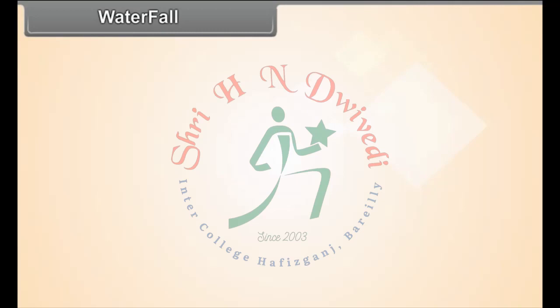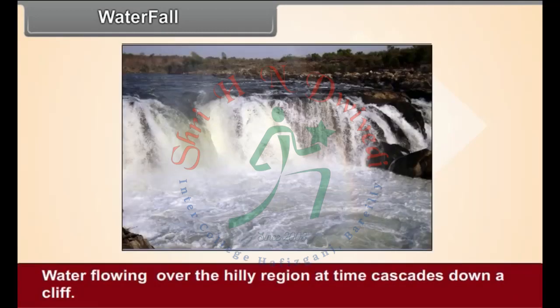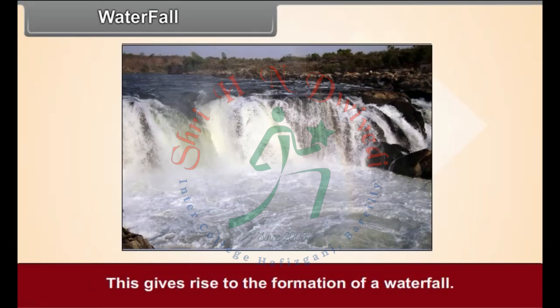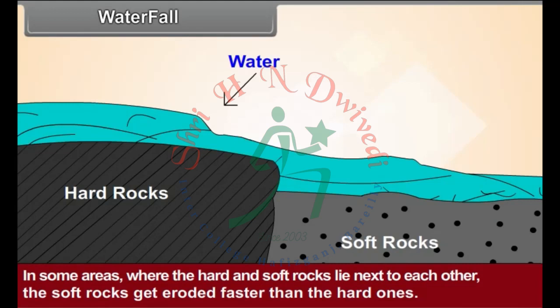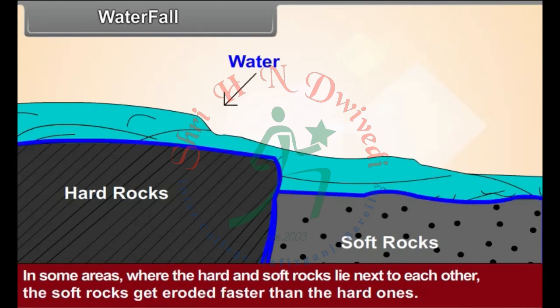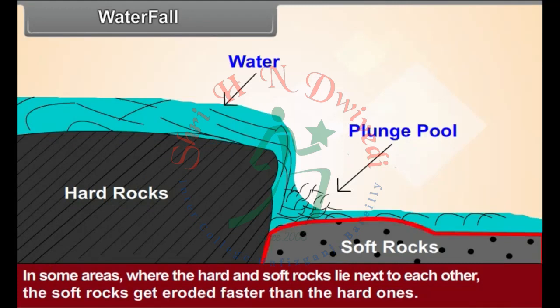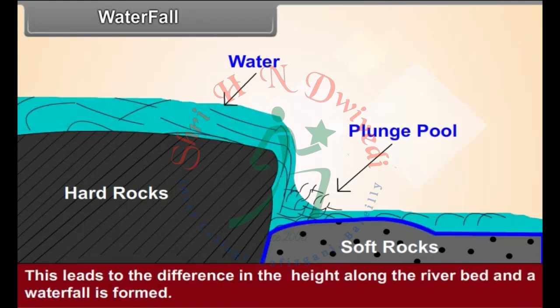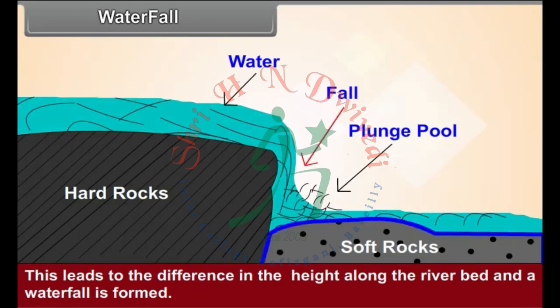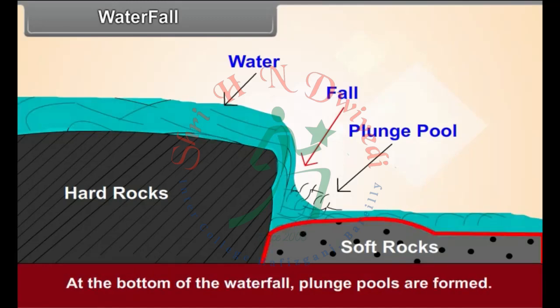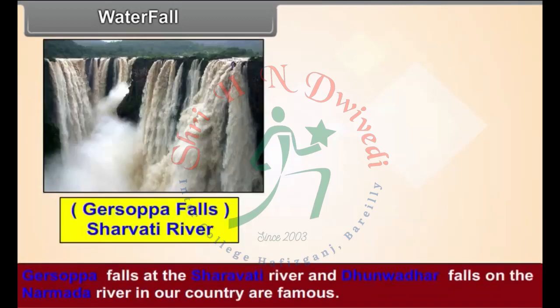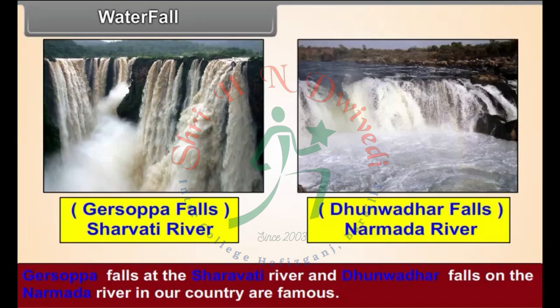Waterfall: Water flowing over a hilly region at times cascades down a cliff, giving rise to the formation of a waterfall. In some areas where hard and soft rocks lie next to each other, the soft rocks get eroded faster than the hard ones. This leads to a difference in height along the river bed and a waterfall is formed. At the bottom of the waterfall, plunge pools are formed. Garsopa Falls on the Sharavati river and Dhuadhar Falls on the Narmada river are famous examples.